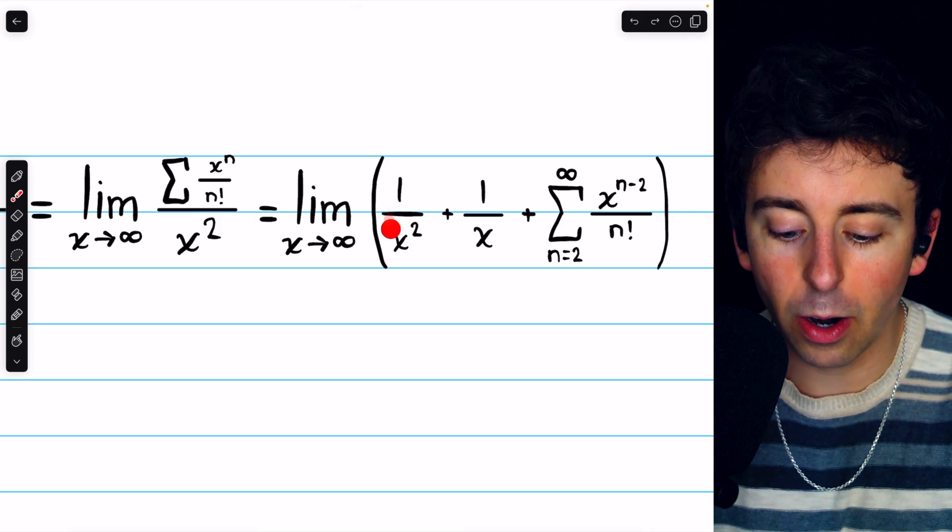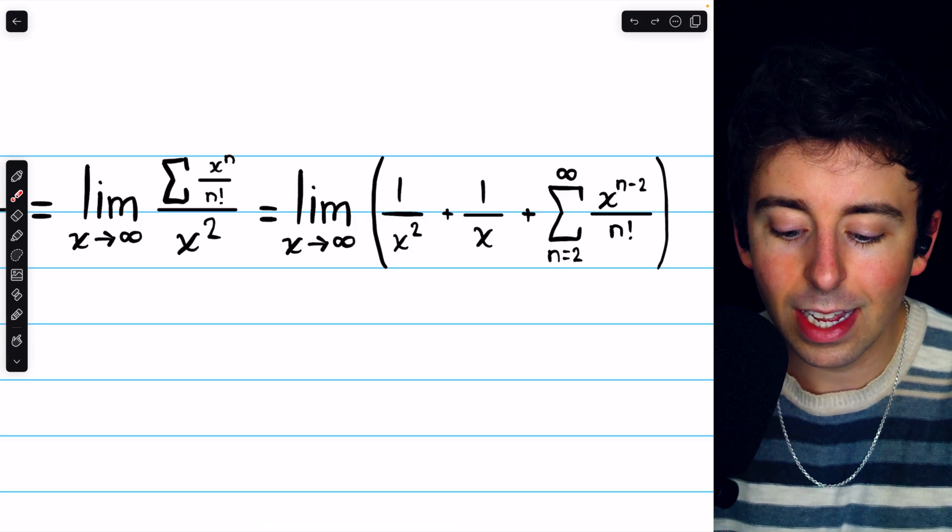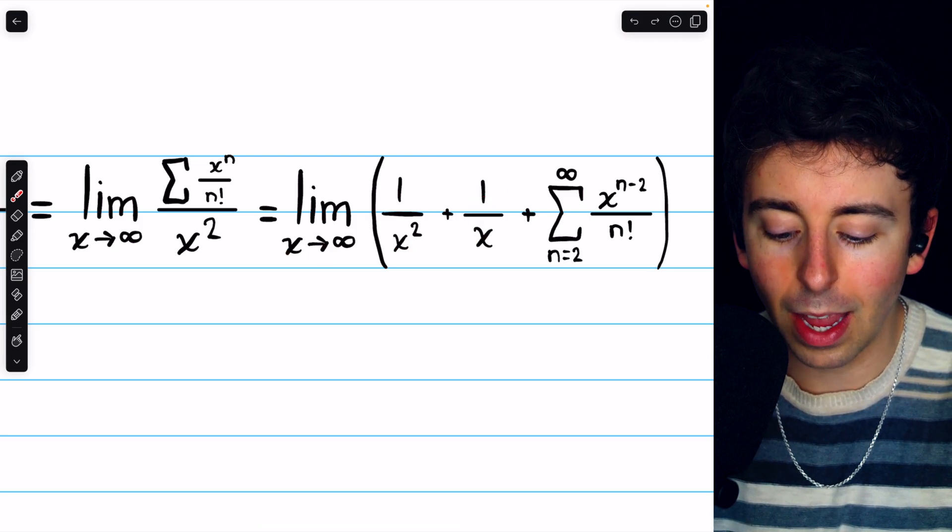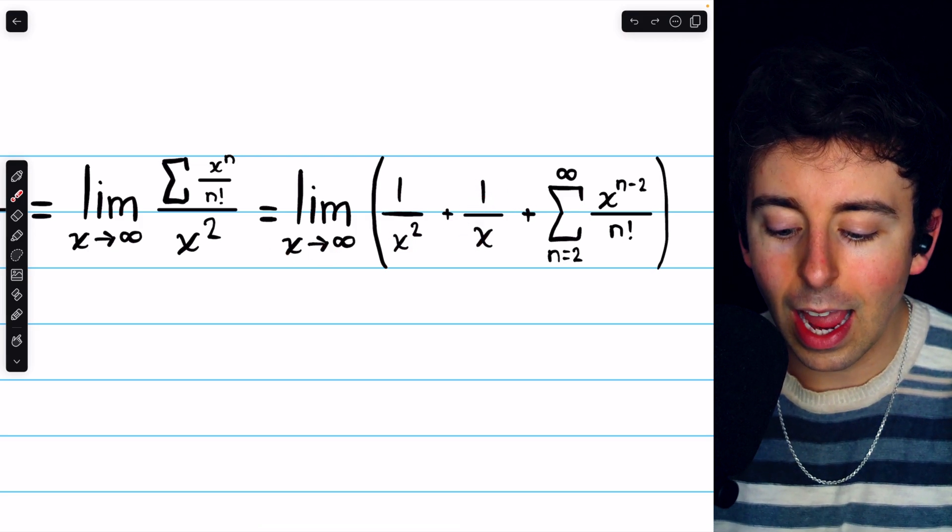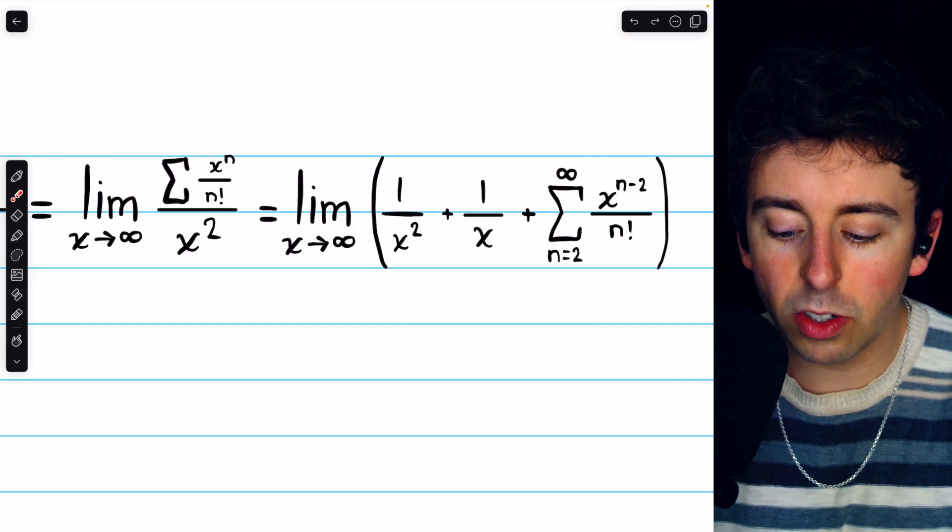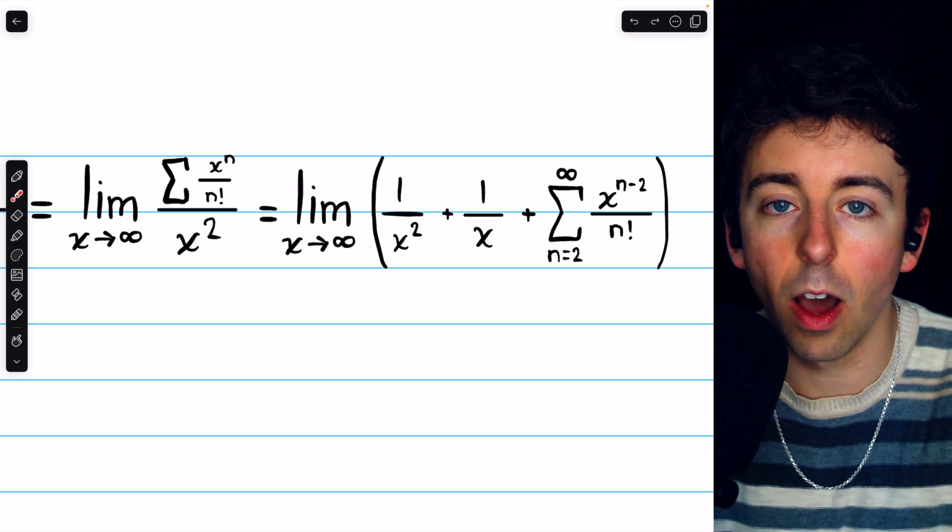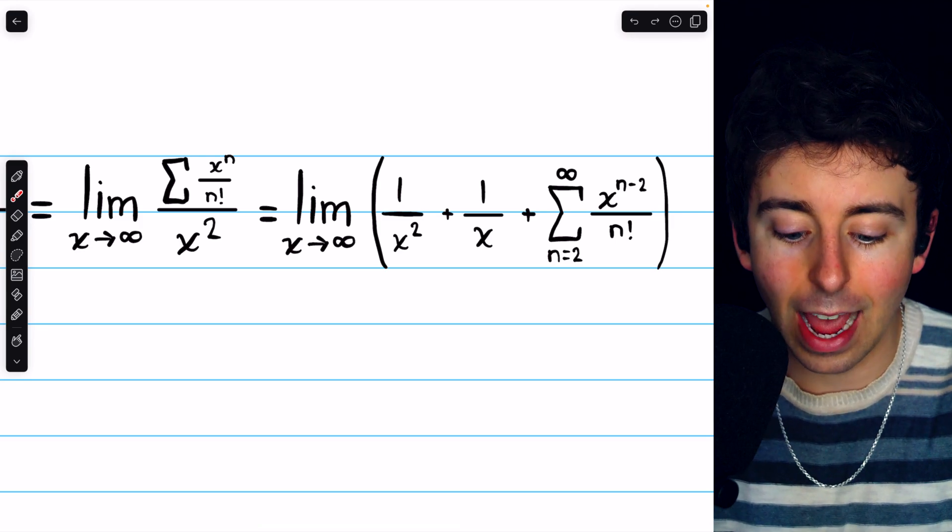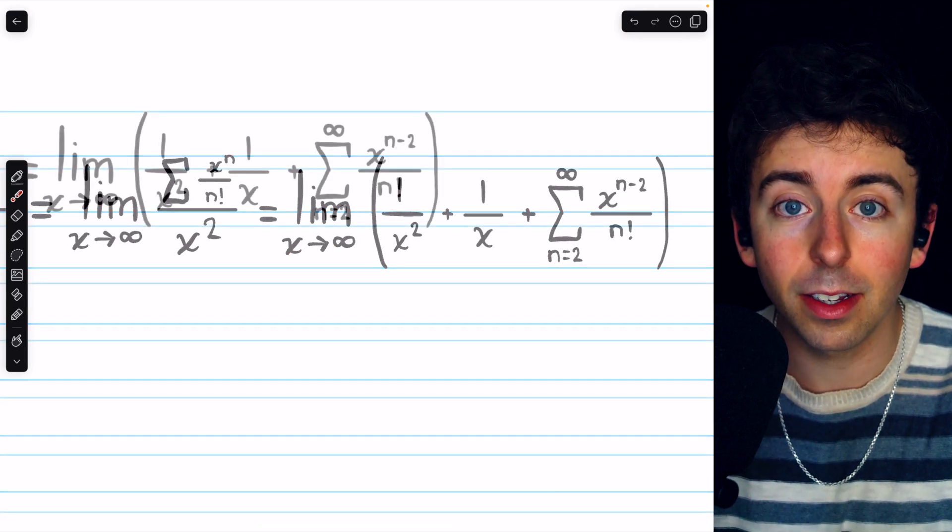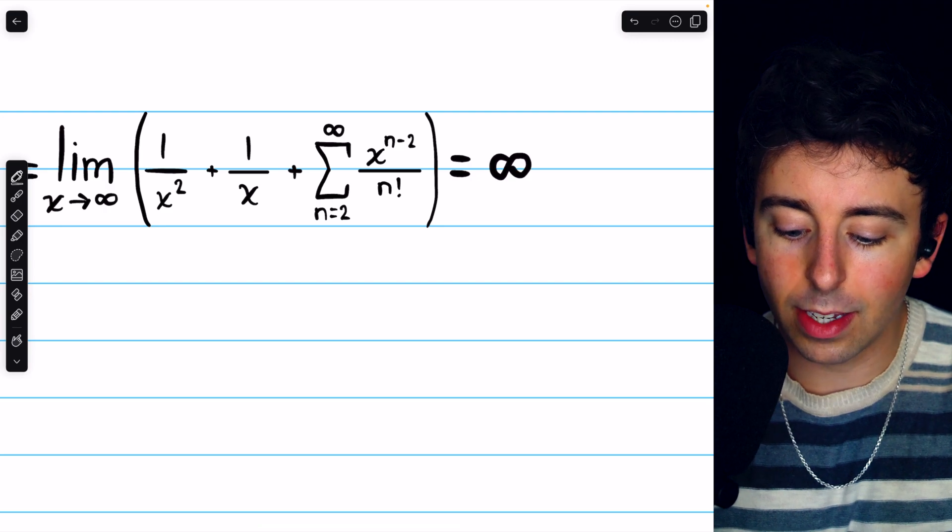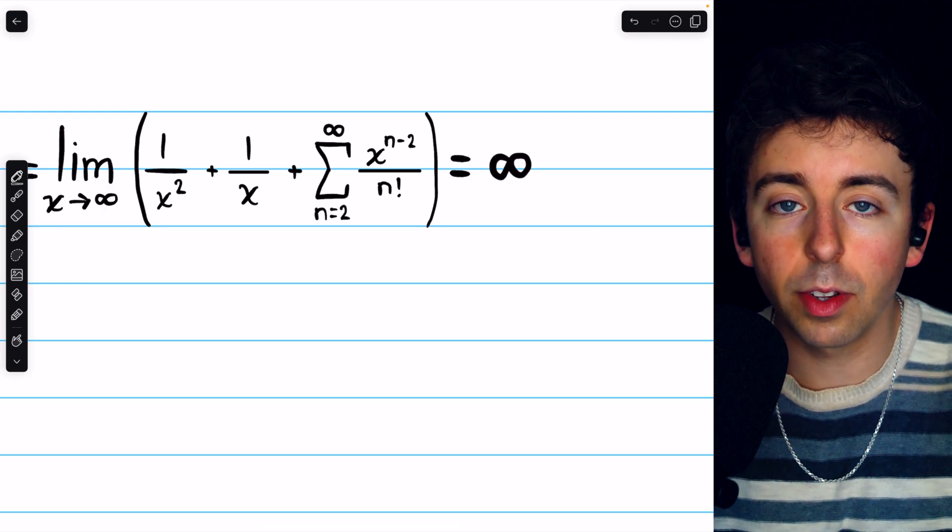This term goes to 0 as x goes to infinity. This term goes to 0 as x goes to infinity. And then in this series, we just have infinitely many terms with x raised to non-negative powers, and x is going to infinity. And so it's clear that this limit diverges to positive infinity.